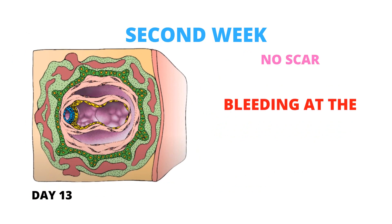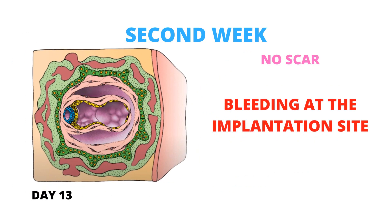By day 13, the scar in the superficial epithelium has disappeared. However, hemorrhage occasionally occurs at the implantation site as a result of increased blood flow to the lacunar spaces. Since this bleeding occurs around day 28 of the menstrual cycle, it can be mistaken for normal menstrual bleeding, and in some cases can cause us to miscalculate the probable date of delivery.